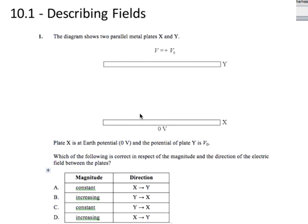I'm here with another question from the question bank in topic 10.1. We're looking at field diagrams. We have a diagram that shows two parallel metal plates X and Y. Plate X is at earth potential (0 V) and plate Y is at a potential V0. We're told in the diagram, even though not in the text, that V0 is a positive potential.